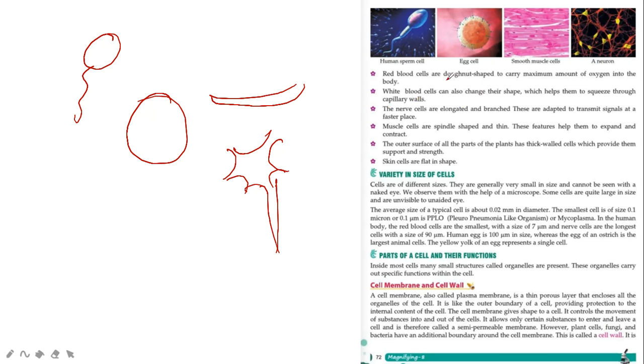RBCs are donut shaped to carry maximum amount of oxygen in the body. WBCs can also change their shape to squeeze through the capillary walls. The nerve cells are elongated, long and branched. They are adapted to transmit signals at a faster pace.